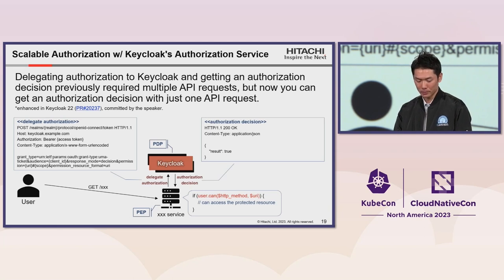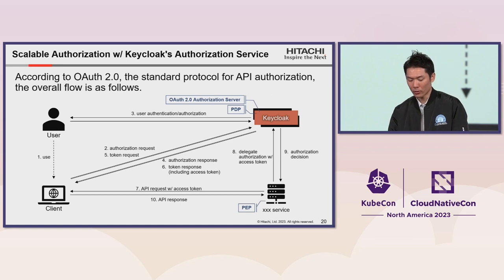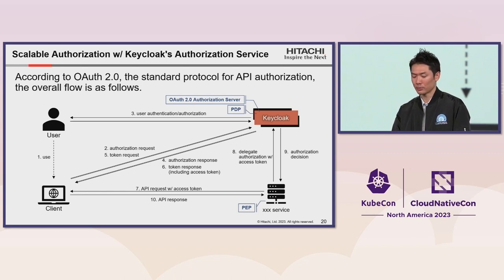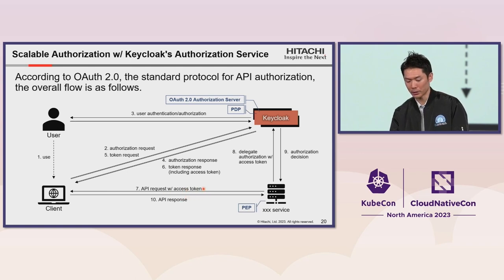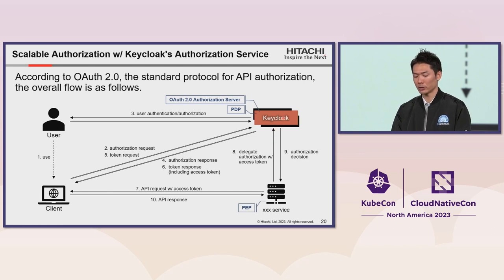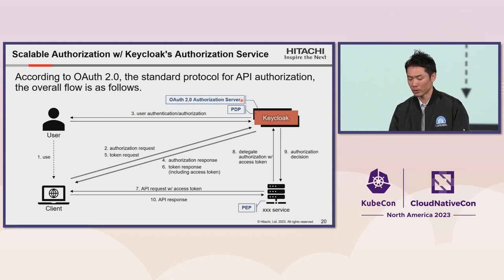This is an overall flow of both authorization and authentication using Keycloak. According to OAuth 2.0, the standard protocol for API authorization, when a client requests an API, the client commonly adds an access token to the API request for authentication. A service delegates authorization with the access token, and Keycloak evaluates policies using the access token. This access token plays an important role. Keycloak can also act as an OAuth 2.0 authorization server and issue access tokens following the OAuth 2.0 authorization code grant.